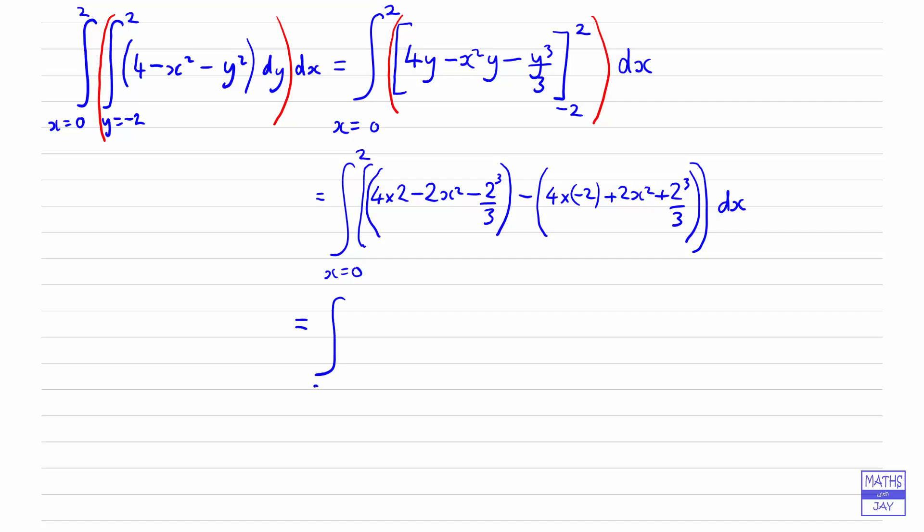So tidying that lot up, what have we got? Well, we've got 4 twos at 8. And then we're taking away 8 thirds in the first bracket. In the second bracket, we've got negative 8 and a plus 8 thirds. So gathering that lot all up together,